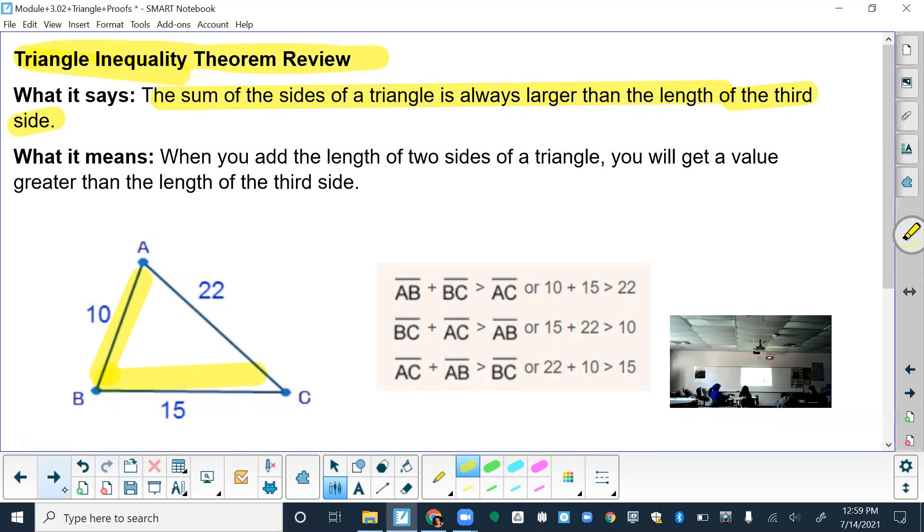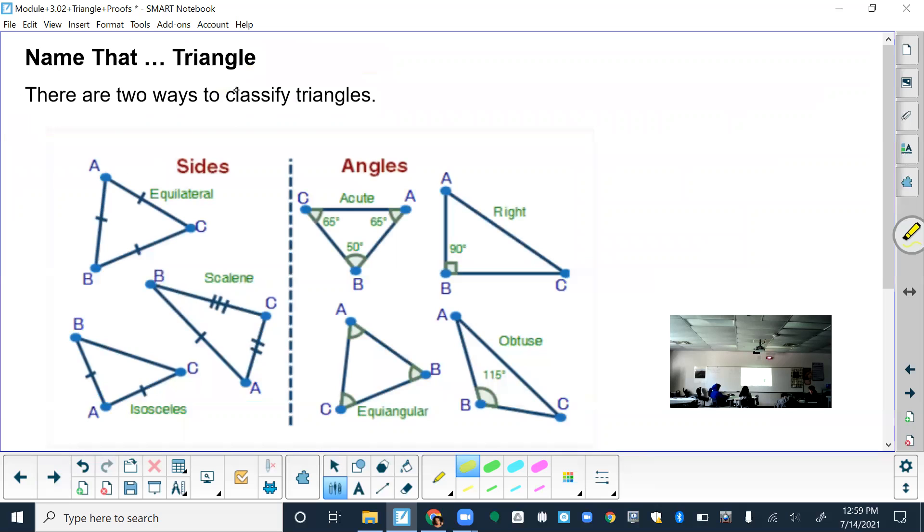There's two ways to classify triangles. That's on the next page. It's either by their sides. So you have equilateral where they're equal distance on all sides. Isosceles where only two are the same. And then scalene where none of them are the same. You can also classify them by angles. So acute, equiangular, obtuse, and right. It's a bit of a review, but just remember there's two ways to classify them.